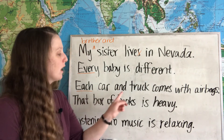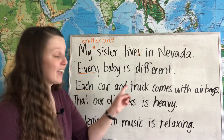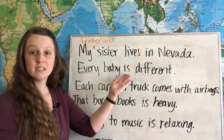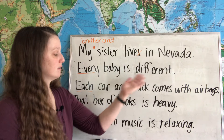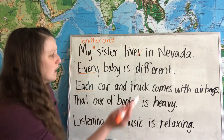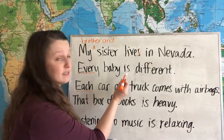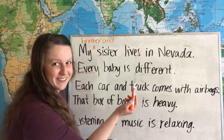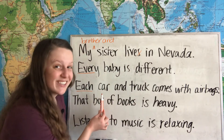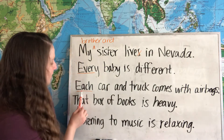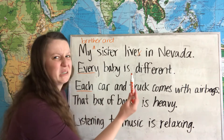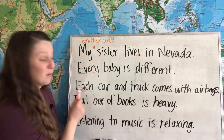Each car and truck — comes, singular — comes with airbags. So we have 'every' with a singular noun and a singular verb, and 'each' with a singular noun — two singular nouns in this case — and still a singular verb. Even though we have these two nouns, it's still singular. This is one of those really weird rules with 'each': because we're using 'each,' we use singular noun and singular noun, and we still use a singular verb when using each and every.